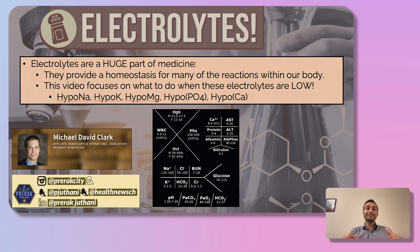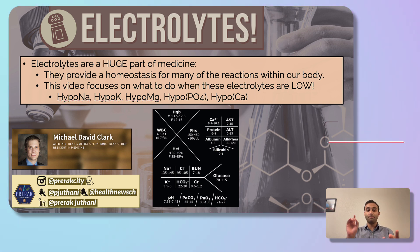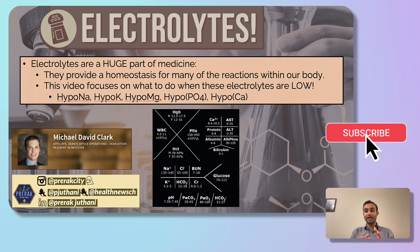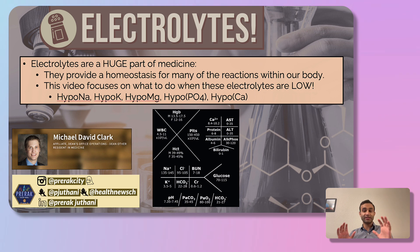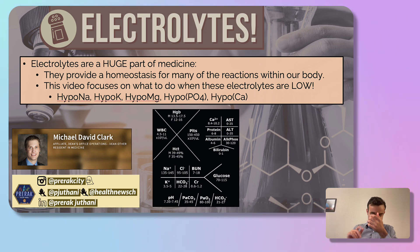Today we'll be talking about how to manage those electrolytes when they're low — hyponatremia, hypokalemia, hypomagnesemia, hypophosphatemia, and hypocalcemia. Electrolytes, when they're low, can cause drastic changes in your body, and you often want to find ways to correct them. Those electrolytes can also be high, and when they're high we manage them very differently. Today we're only focusing on what to do when they're low.